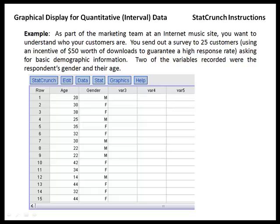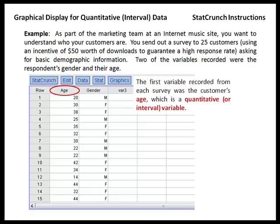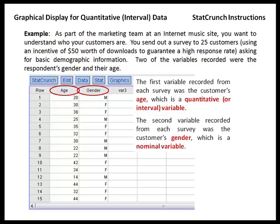If we consider this data set in StatCrunch, you'll notice it has two columns. The first column contains the variable age, which is a quantitative variable. The second column contains the respondents' gender, which is a nominal variable. As we've seen previously, if we wanted to create a graphical display for the nominal variable of gender, we could choose to create a bar graph or a pie chart.